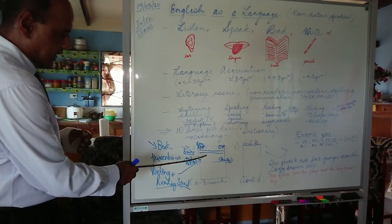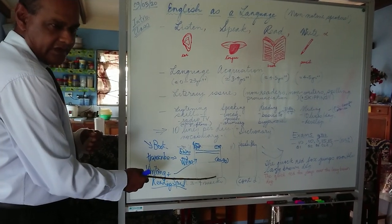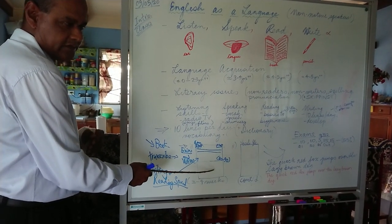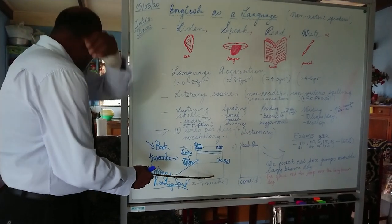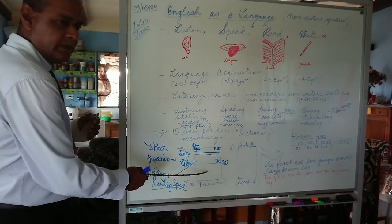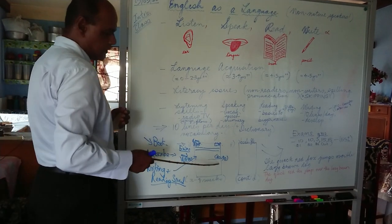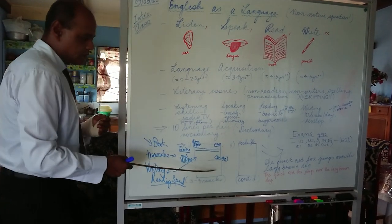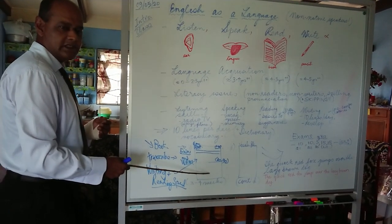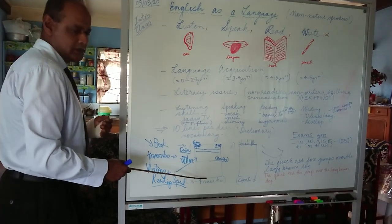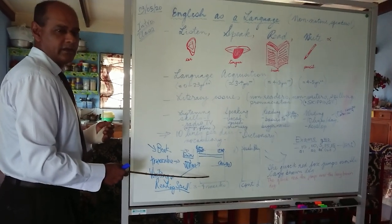Transcribe — write ten lines per day — develop that and share with your friends and relatives. In these times, you have younger siblings, so you can have a competition: try and see how long it takes to find the best writer in the family, who's the fastest reader. That's a fun way to spend time with family.